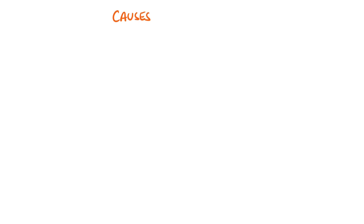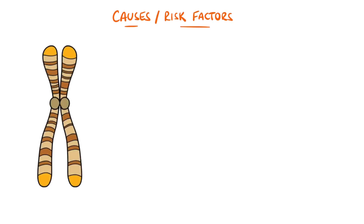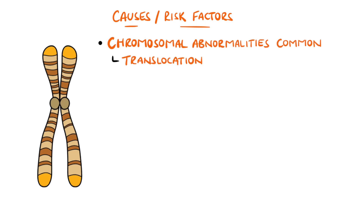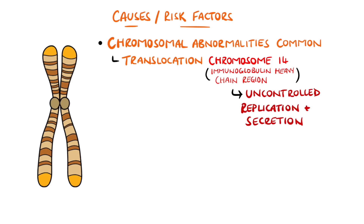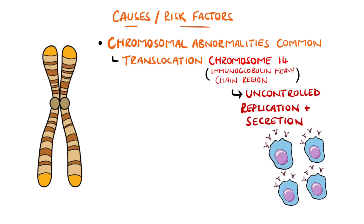Several chromosomal abnormalities are found in multiple myeloma. Particularly common are translocations involving chromosome 14, which features the immunoglobulin heavy chain region that ultimately leads to uncontrolled replication of plasma cells and secretion of the monoclonal protein.